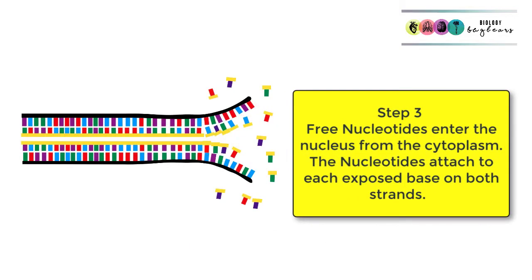Step number three, this is when those nucleotides, those building blocks, enter the nucleus from the cytoplasm and they're going to attach onto exposed bases on both strands. If there is an A exposed, a T is going to attach. If there's a G exposed, a C is going to attach. This is complementary base pairing.